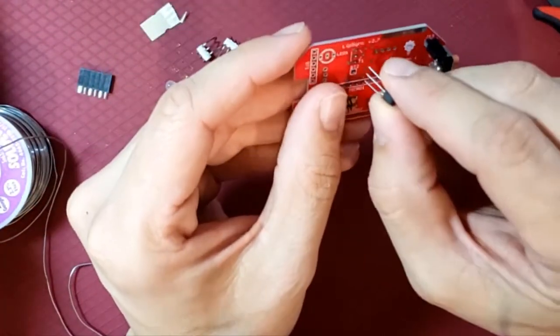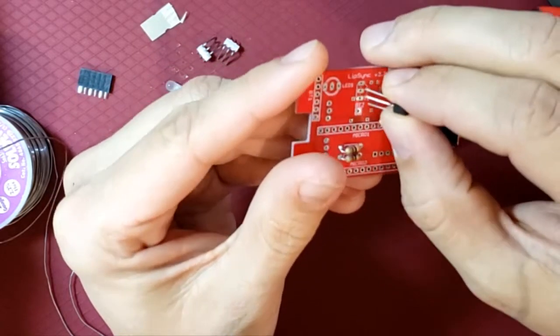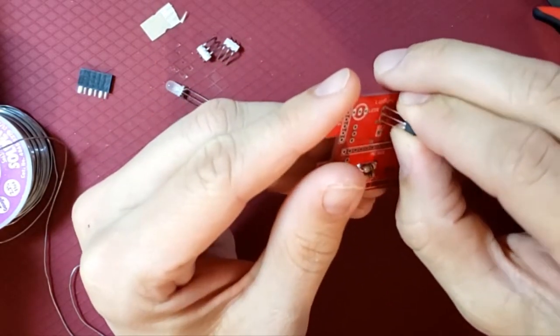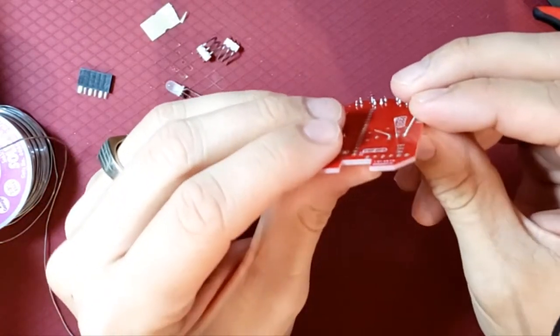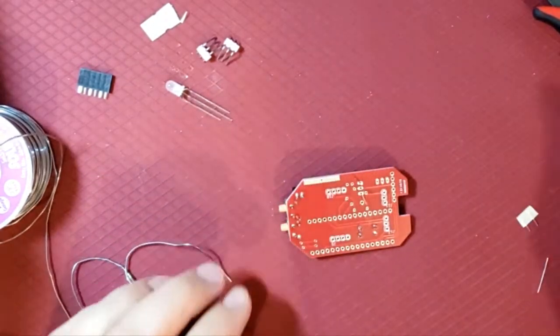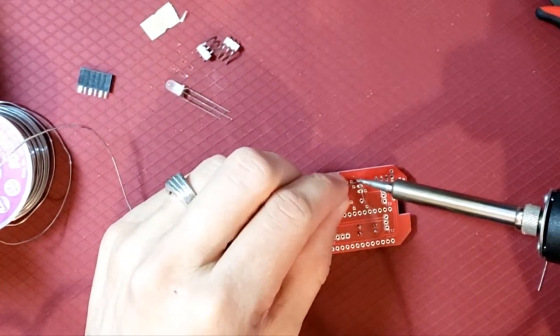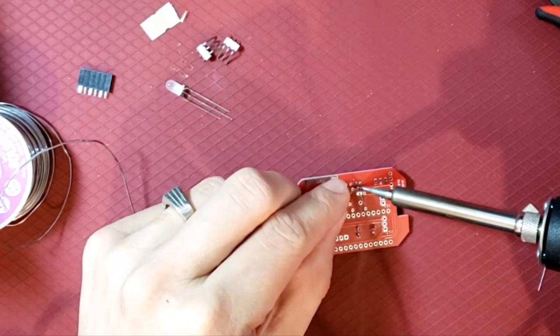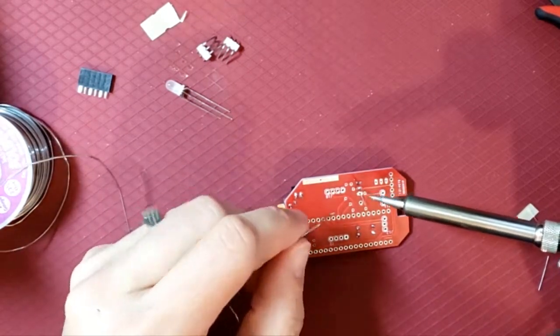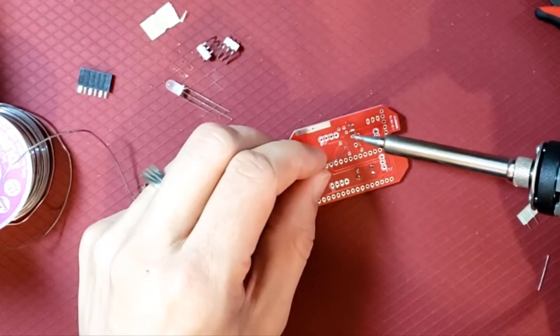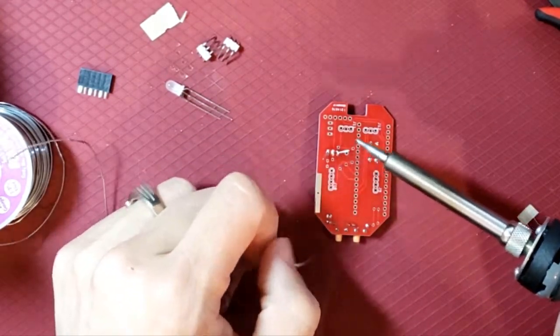This does matter which way it goes on the board. You can see this little white outline of the piece. I'll put this through. Bend those legs out a little bit to hold it in place and solder away.